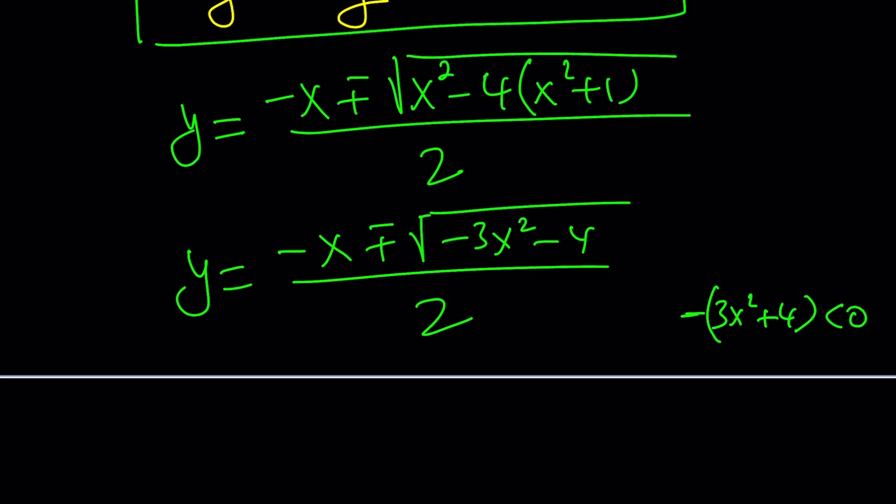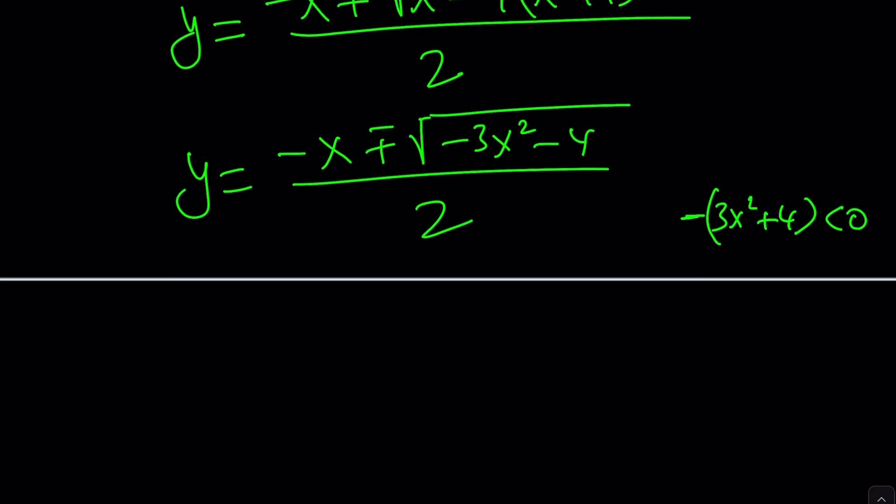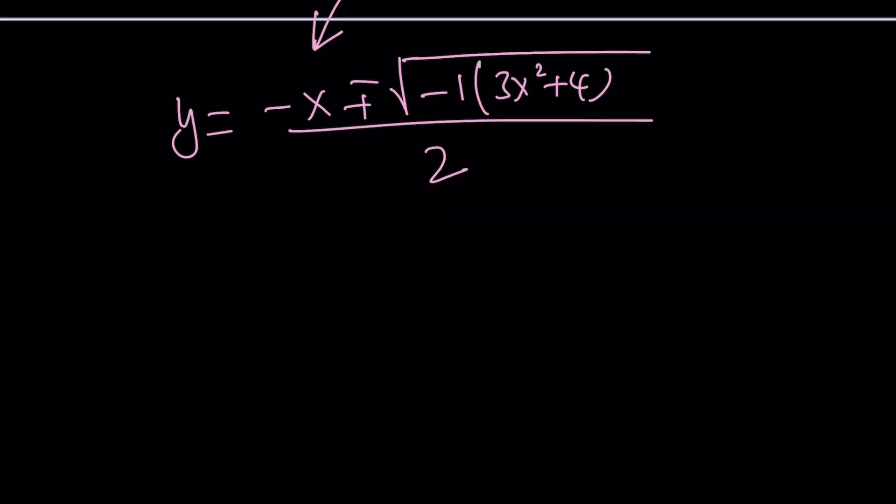That's why we don't really get anything from the other factor except for complex solutions. What are the complex solutions? That's a good question. That's a million dollar question. So here's how we can find the complex solutions. Let's go ahead and write this as the negative 1 times the square root of 3x squared plus 4. And when you take the square root of negative 1, it's going to be i. And then it'll be plus minus this times i divided by 2. So those would be the non-real complex solutions.